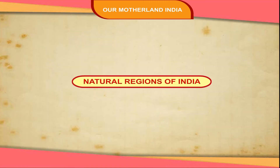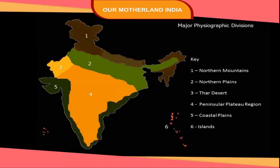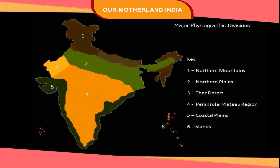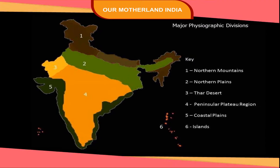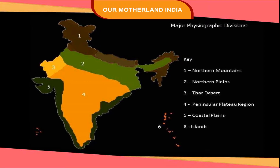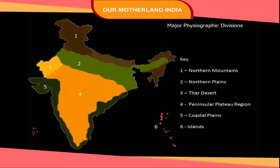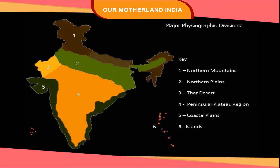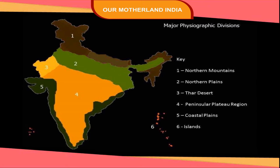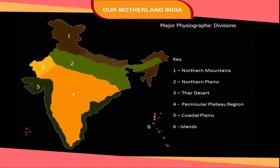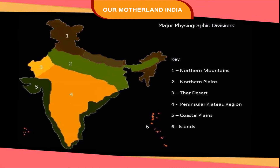Natural Regions of India. The land surfaces having similar physical features throughout make a natural region. India is divided into six natural regions.